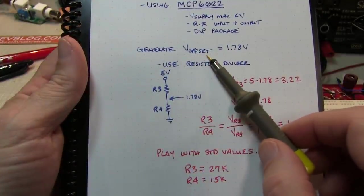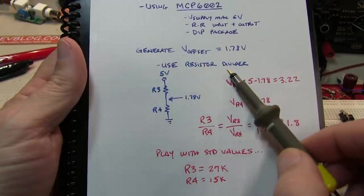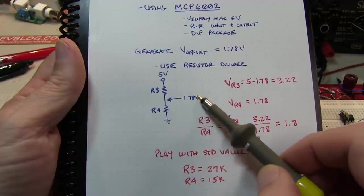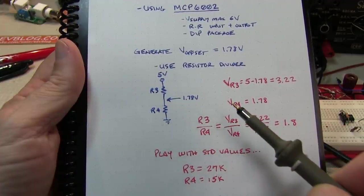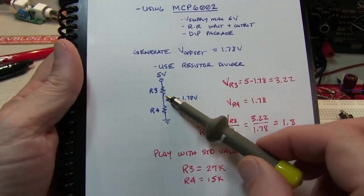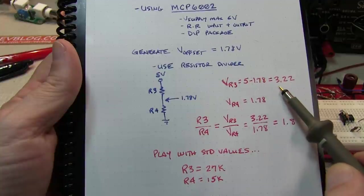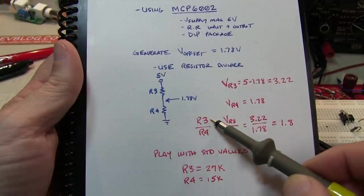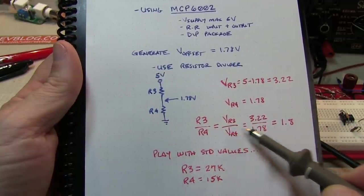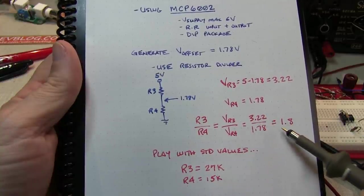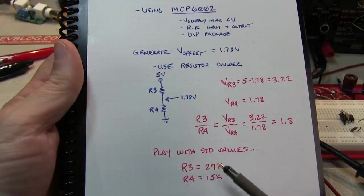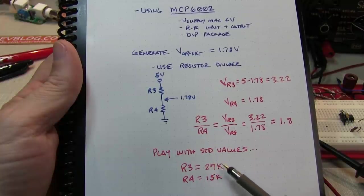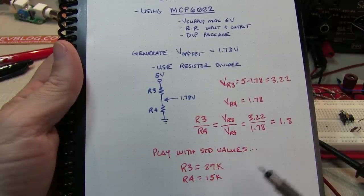We still have to generate that V offset voltage for the non-inverting input. It's just another resistor divider with the 5 volt supply, call it R3 and R4. We know that we want the voltage at this point to be 1.78 volts. The voltage across R3 is going to be 5 minus 1.78 or 3.22. The voltage across R4 is 1.78. The resistor ratio of R3 to R4 is going to be equal to that voltage ratio, which is 3.22 divided by 1.78 or 1.8. Playing around again with some standard resistor values, I found that 15K for R4 and 27K for R3 satisfy that 1.8 to 1 resistor ratio.